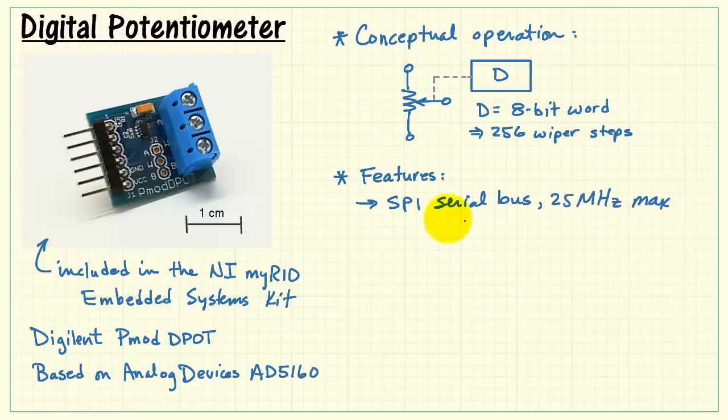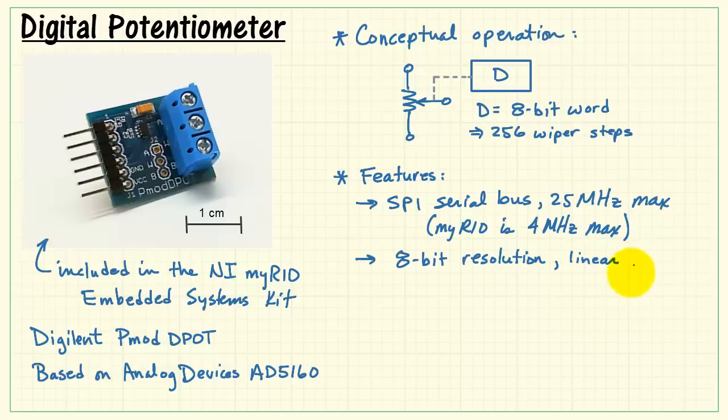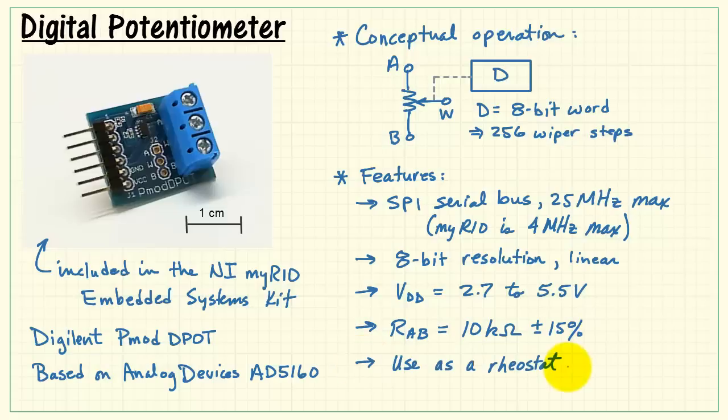Taking a look at some of the features, it's based on the SPI serial bus with 25 megahertz maximum clock rate. The resistance between terminals A and B is 10 kilo ohms plus or minus 15%. You can either use it as a rheostat, that is taking the resistance between the wiper and either of the end terminals, R sub WB or R sub WA, or you can set this up as a voltage divider.